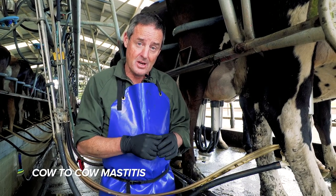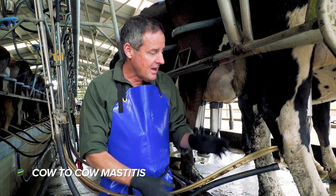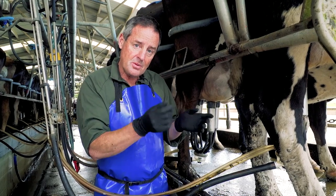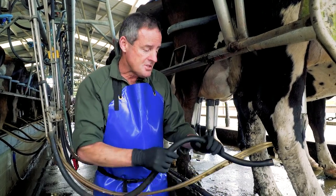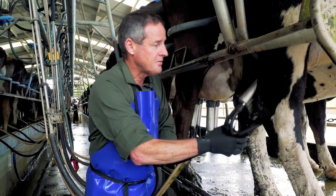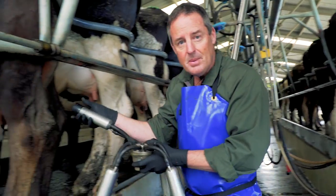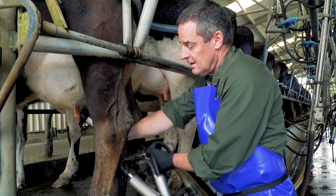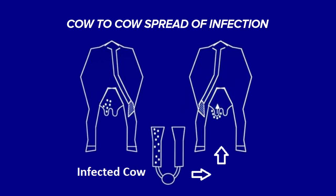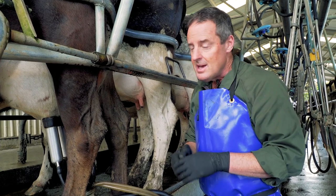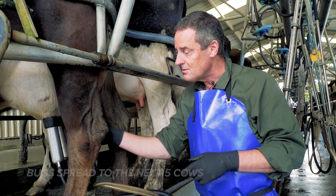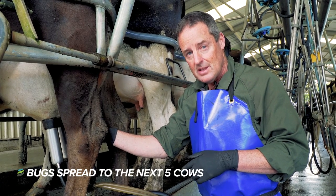The second type of mastitis is cow-to-cow spread. If we've got an infected cow, the bugs from her go into the liner. When I take the cups off her and move those cups onto another cow, I'm taking the bugs with me. The bugs that were in the teat of that cow end up in the liner and get transferred onto the teats of the other cow. All the work shows that the infected cow can spread bugs for about the next five cows that those cups go on.